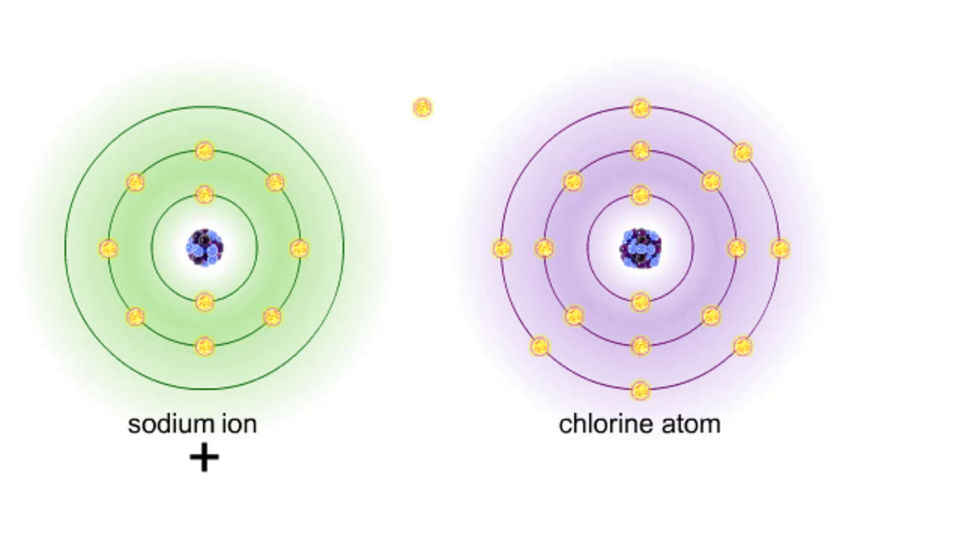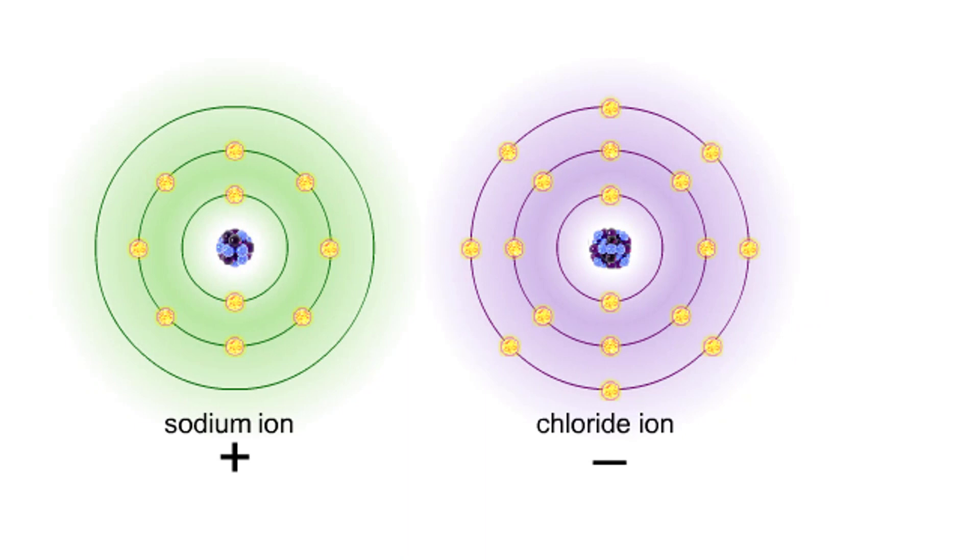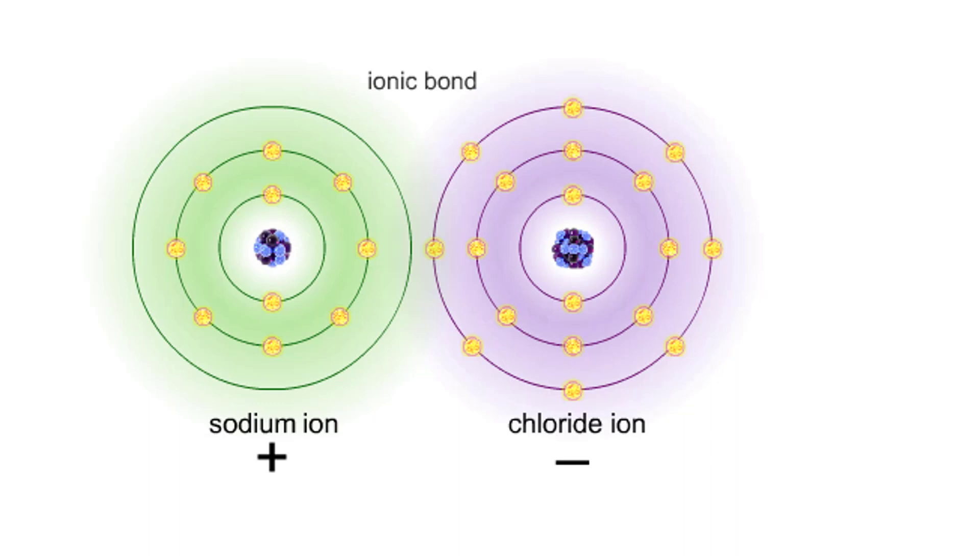A chlorine atom has an electron vacancy in its outer shell and can acquire another electron. This ionizes the atom to form a negatively charged chloride ion. The two oppositely charged ions attract each other. An association of two ions with opposing charges is known as an ionic bond.